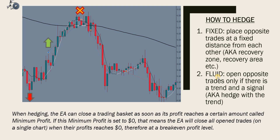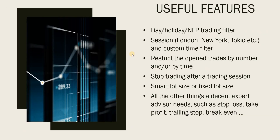Another hedging method is fluid hedging — also called hedging with the trend. This means opening opposite trades only if there is a trend and a signal. Basically, you let the trade run and optionally place a stop loss at a higher level to give the price room to move. However, if the trend changes, you start opening buys — that would be hedging with the trend.